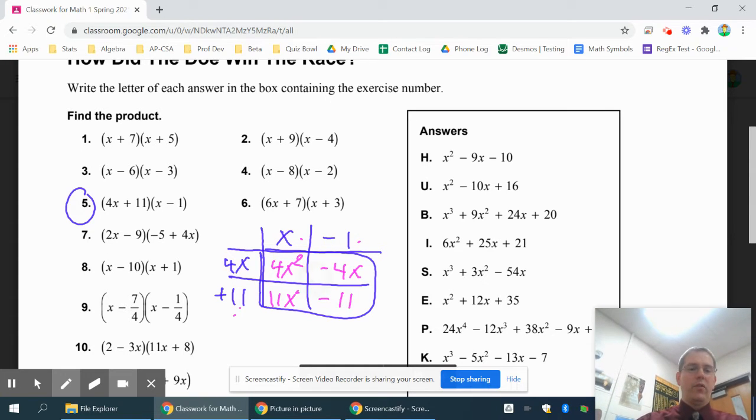Look for any like terms, and if you use the box method, the like terms, if they're there, will usually be diagonal across from each other like that. So your final answer is 4x squared. Put together 11x minus 4x is 7x, and then minus 11.